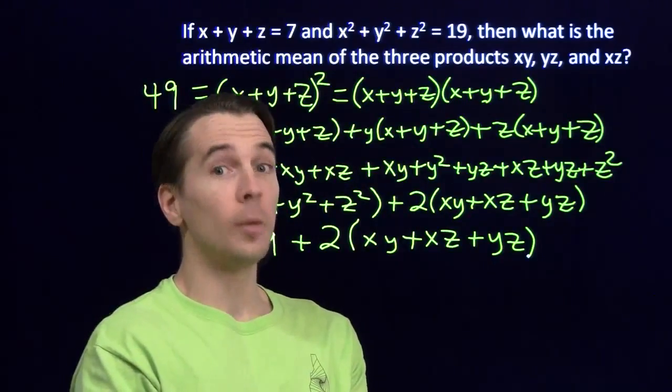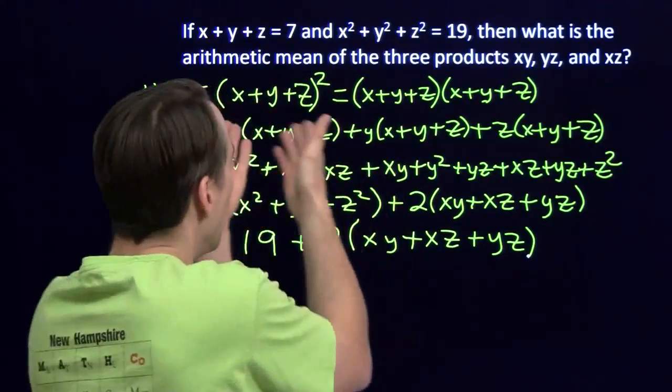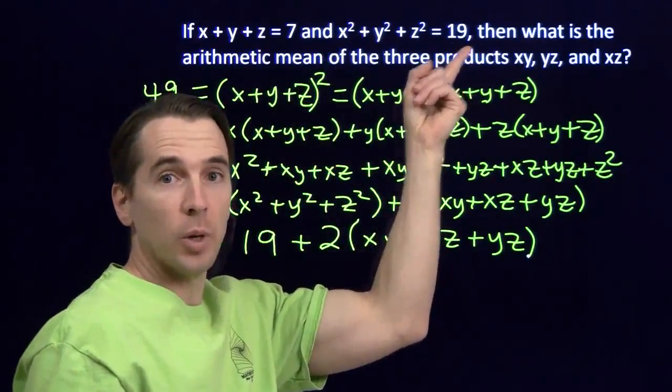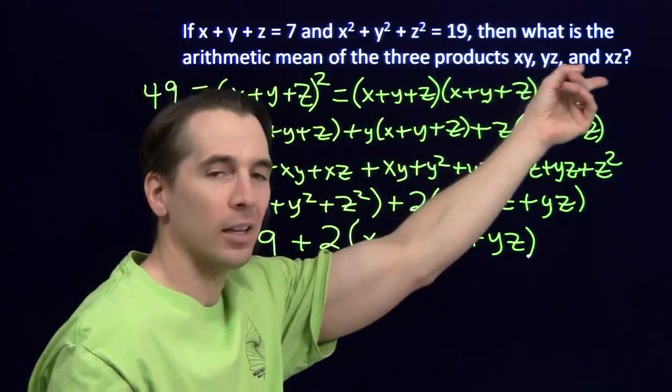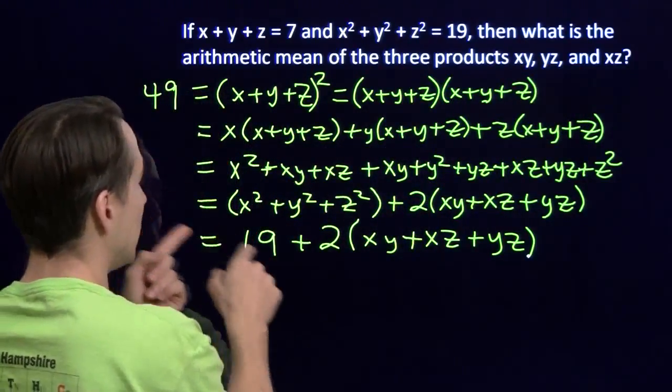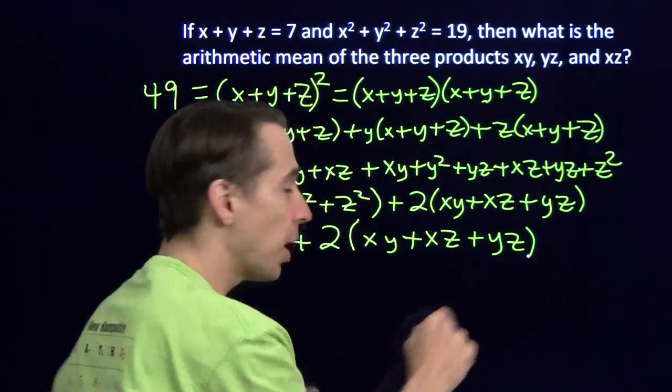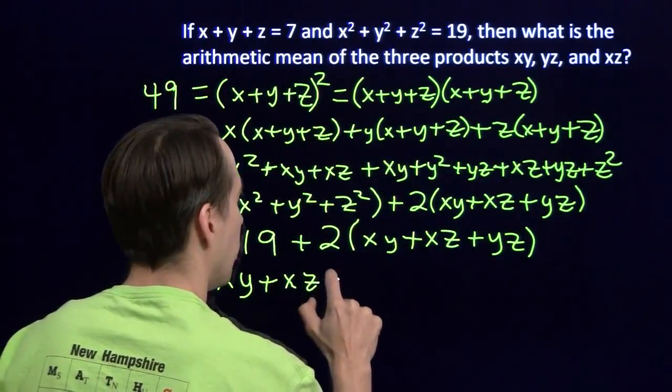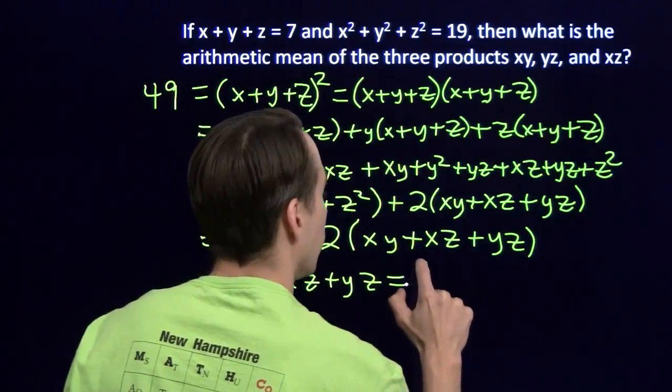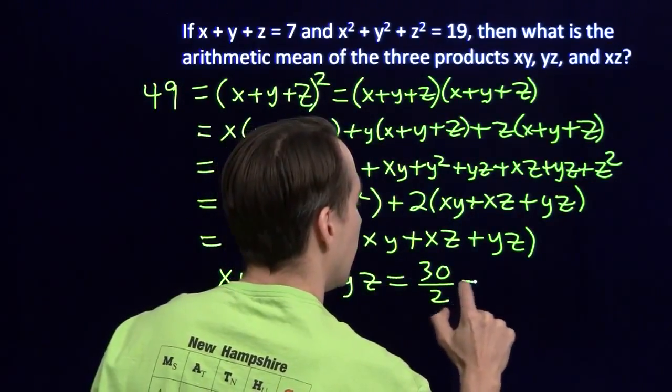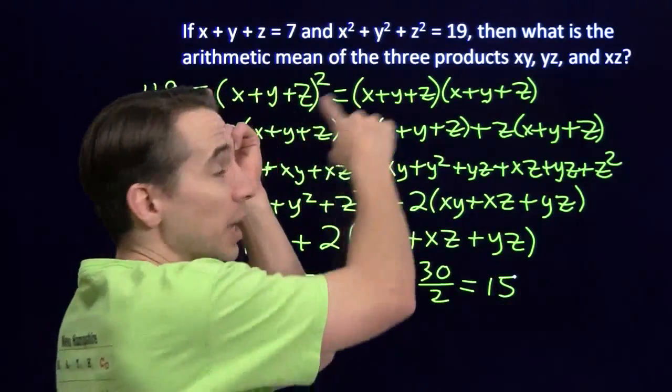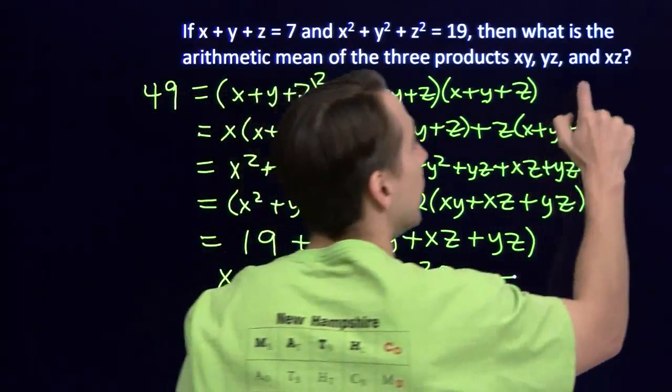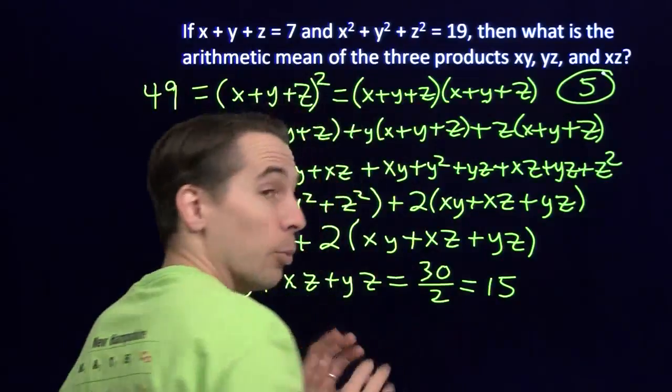Now I can subtract 19 from both sides, and I'll have 30 equals 2 times this product. And that tells me that xy plus xz plus yz equals 30 over 2. Divide by that 2, and that gives me 15. Now, I want the arithmetic mean of these. I know that their sum is 15, so their arithmetic mean, their average, I divide by 3, and I get 5.